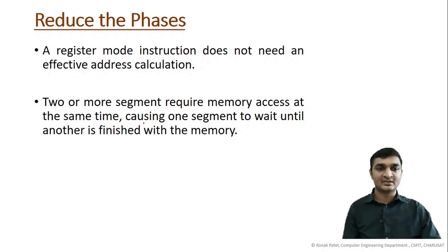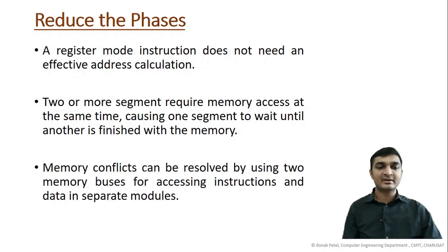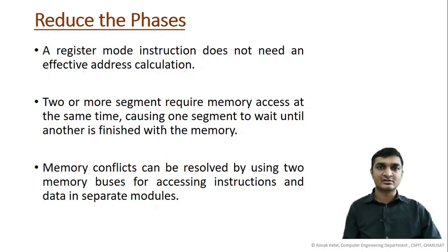A register mode instruction does not need an effective address calculation. When two or more segments require memory access at the same time, it causes one segment to wait until another is finished with memory. Even though you have divided the phases, since both require memory access they cannot perform parallel memory access — they still need to wait. Memory conflicts can be resolved by using two memory buses for accessing instructions and data in separate modules.